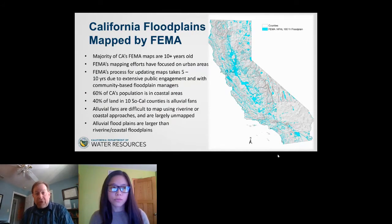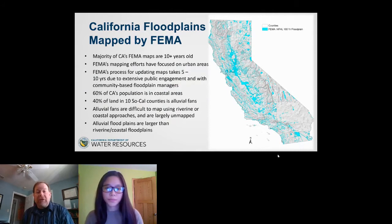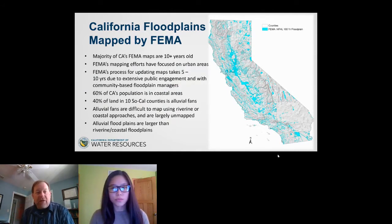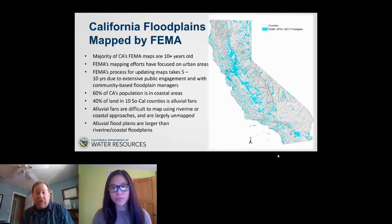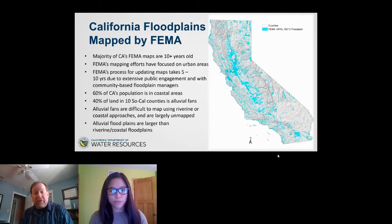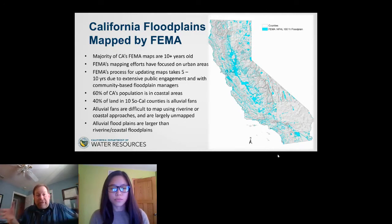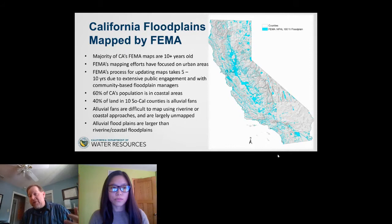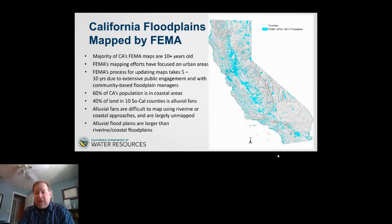60% of California's population is in coastal areas, exposing them to coastal flood hazards. In Southern California, 40% of the land in the 10 southern California counties is alluvial fans. Alluvial fans are really difficult to map using riverine or coastal approaches, so a lot of the risk is unmapped. Alluvial floodplains are actually larger than most riverine and coastal floodplains — they spread out. Many of you may have heard of the Montecito fire and the debris flows that came out of that — that's a classic example.